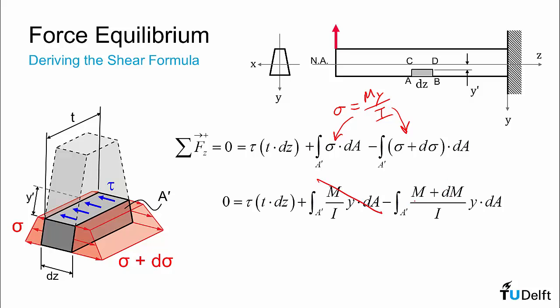So this is cancelled out by that term. And what we are left with is that 1 over I times tau t times dm by dz is equal to the integral over the domain A prime of y times dA.